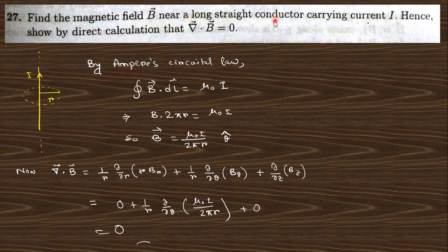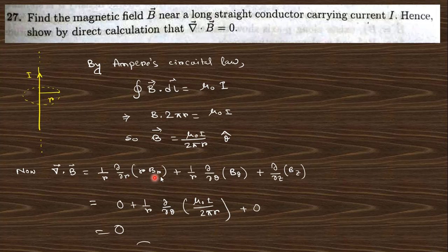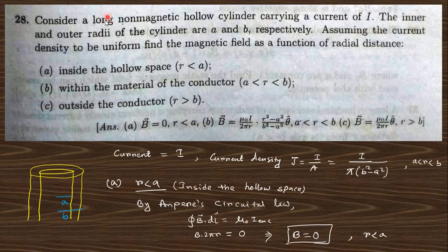Next: Find the magnetic field B near a long straight conductor carrying current I, and show by direct calculation that divergence of B is zero. For a long straight conductor, the magnetic field is B = (μ₀I)/(2πr) θ̂, using Ampere's law. Taking the divergence of B in cylindrical coordinates — since there is no function of θ — the result is zero.